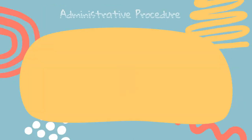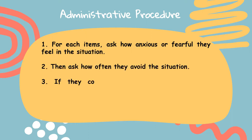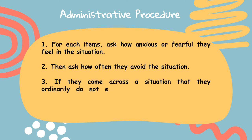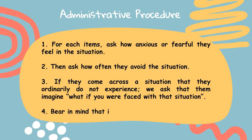Administrative procedure: for each item, ask how anxious or fearful they feel in the situation. Then ask how often they avoid the situation. If they come across a situation that they ordinarily do not experience, ask them to imagine what it would be like if they were faced with that situation. Bear in mind that the reference period is the past week.